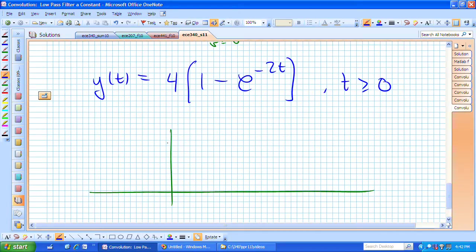That's now my response of a low-pass filter due to this constant that turns on at t equals 0. Here's the independent variable t. We start at t equals 0, which is 1, meaning our y is going to start at 0.